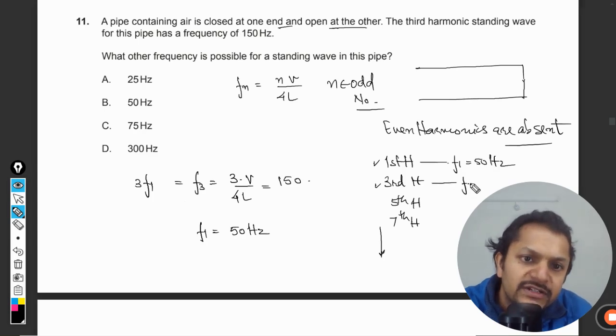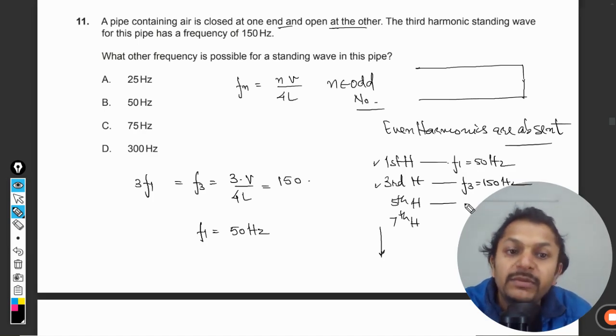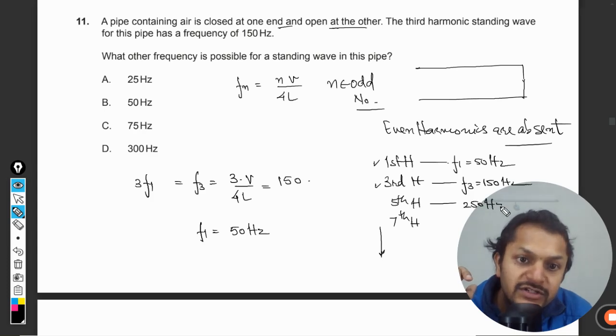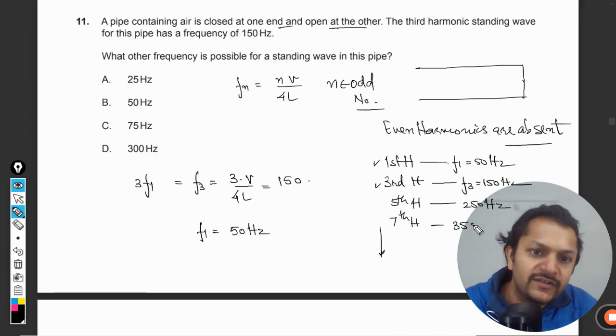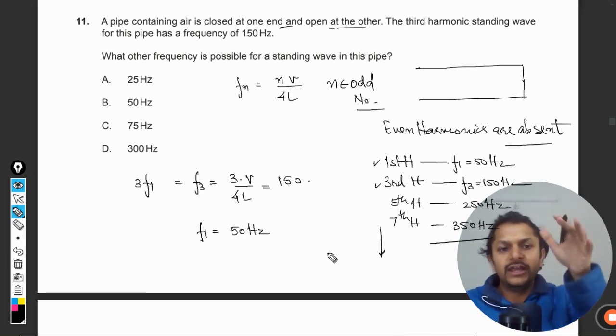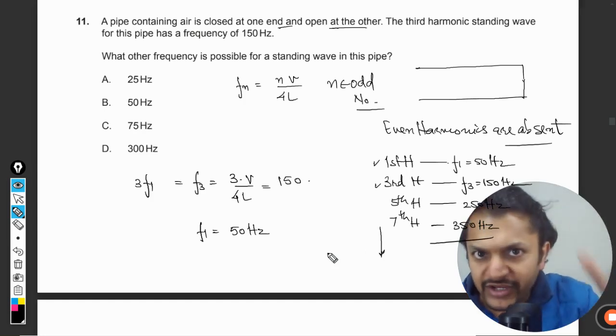For the third harmonics it will become multiplied by 3, and for fifth it will be multiplied by 5, and 5 times 5 is 25, it will become 250 hertz. For seventh it will be 7 times 5 is 35, so that will be 350 hertz, and this is how it will keep on moving. The table we can create.